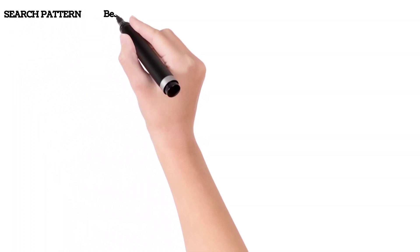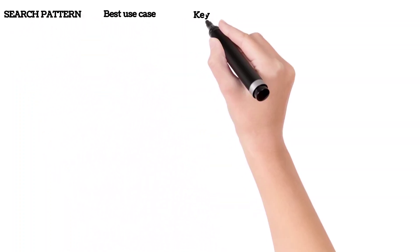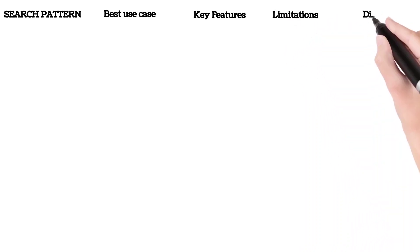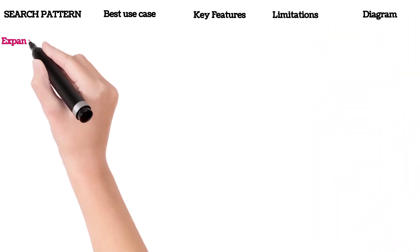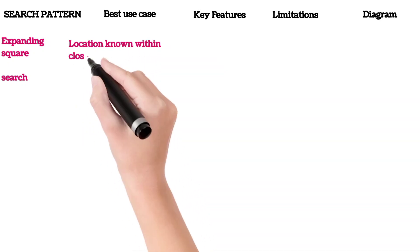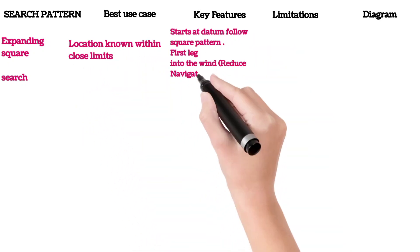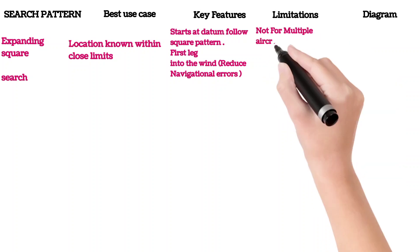In this video, I'm going to discuss various search patterns according to IAMSAR. First is the expanding square search. In this, the location is known within close limits. It starts at a datum, follows a square pattern, and the first leg is into the wind.